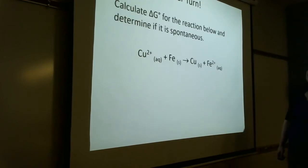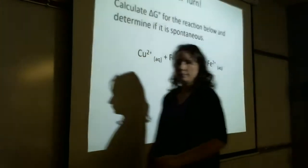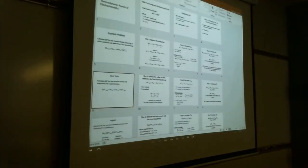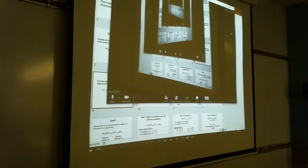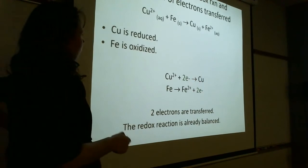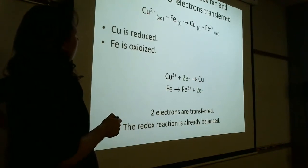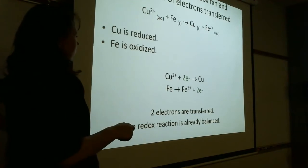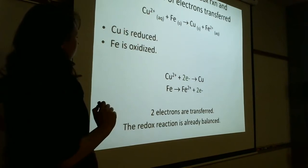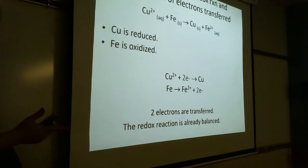Now you try one. Here's a reaction — determine if it's spontaneous. First, balance the redox and figure out how many electrons were transferred. This one's easy: copper(II) gains two electrons, iron loses two electrons. So copper(II) gets reduced and iron gets oxidized. It's already balanced, so it's easy to deal with.